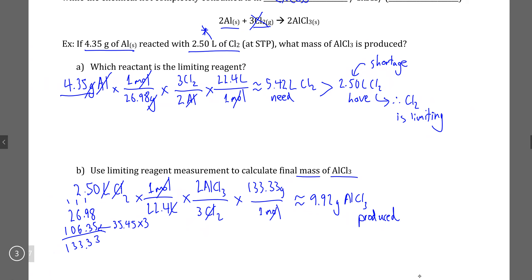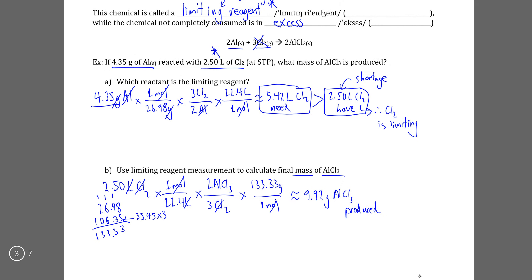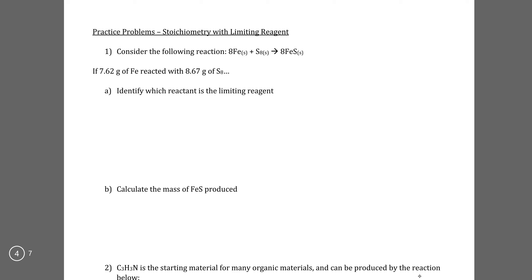In summary, when you have one limiting and one excess chemical, first identify which is limiting by calculating how much of the second chemical you would need to react with the first, then compare that amount to what you actually have. If you have a shortage, you've found the limiting reagent; if you have a surplus, you've found the excess reagent. Use the limiting reagent measurement for your final calculation to determine how much product is produced.